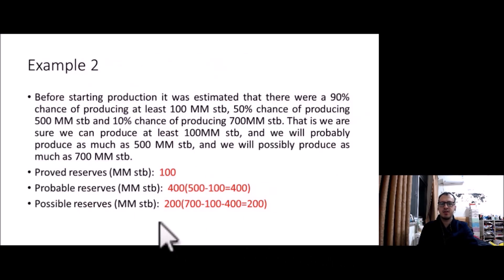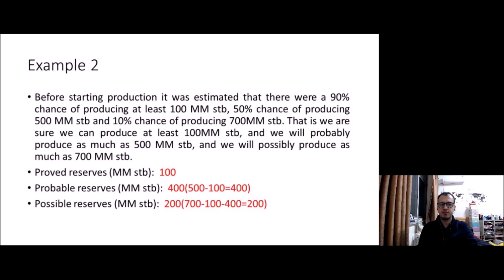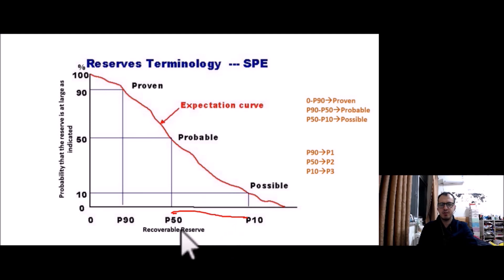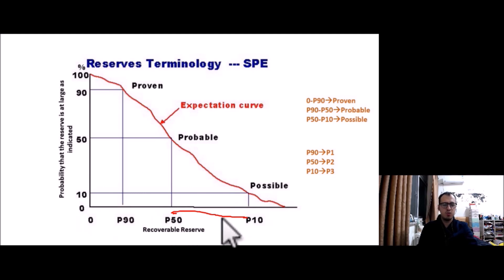Possible reserve: P10 = 700 million STB, which is the sum of proved plus probable plus possible. We know proved = 100 and probable = 400, so possible = 700 − 100 − 400 = 200 million STB.